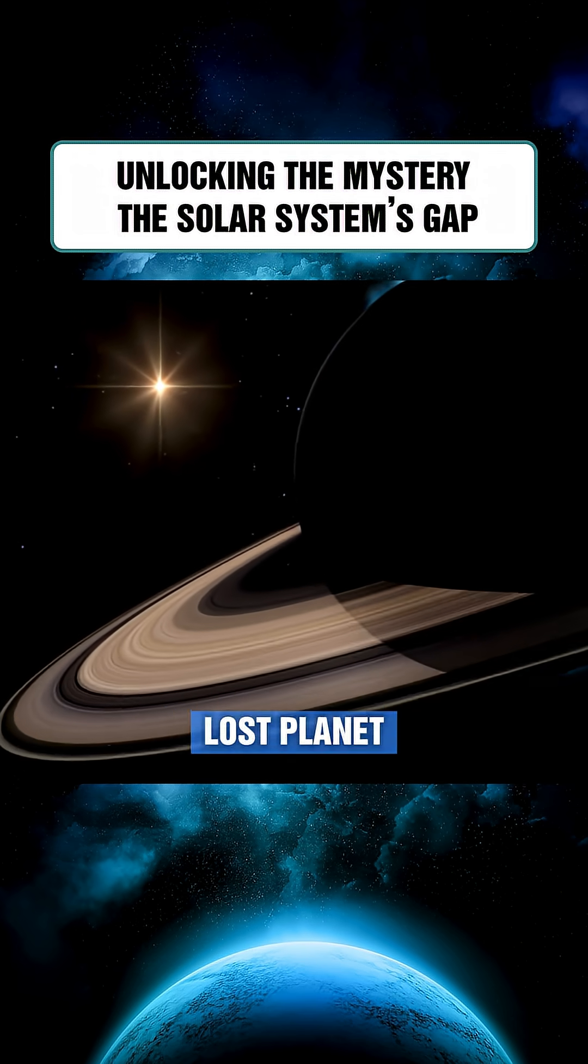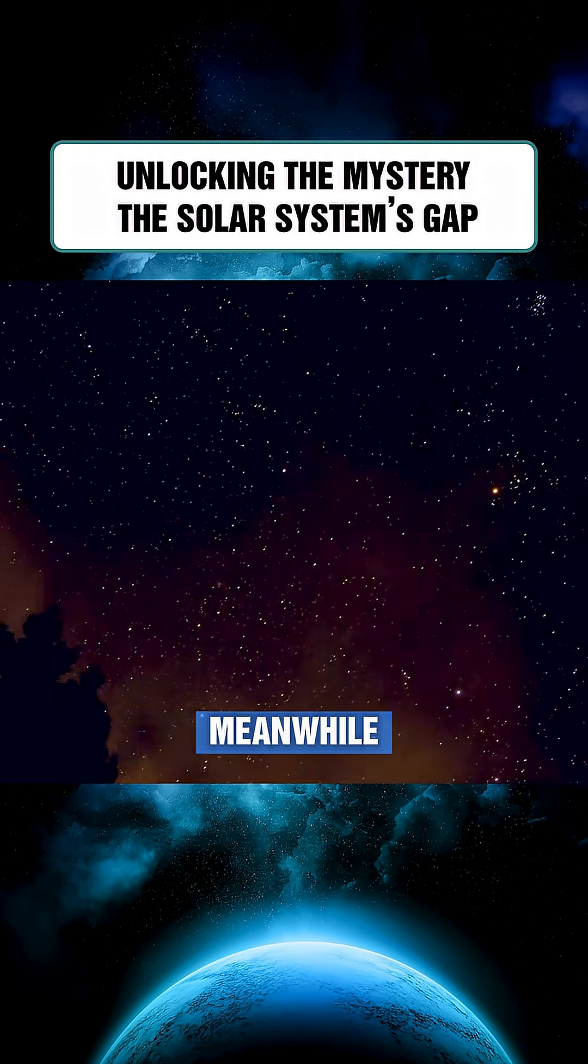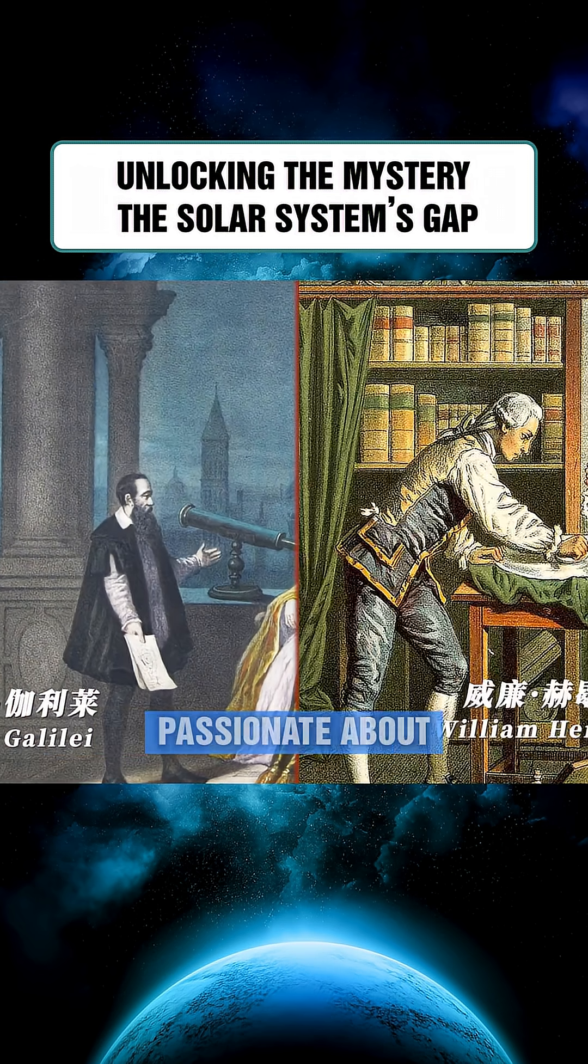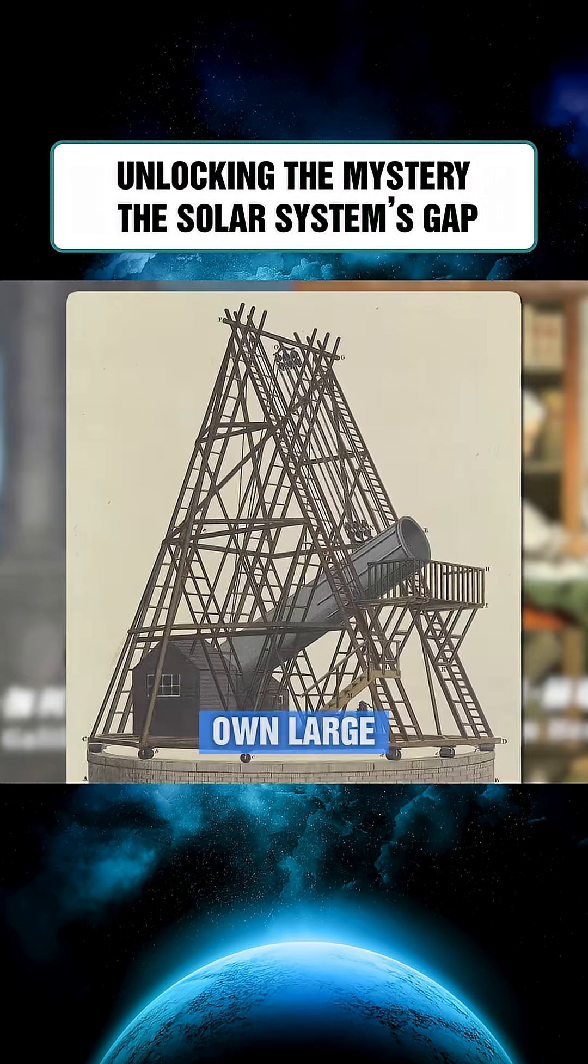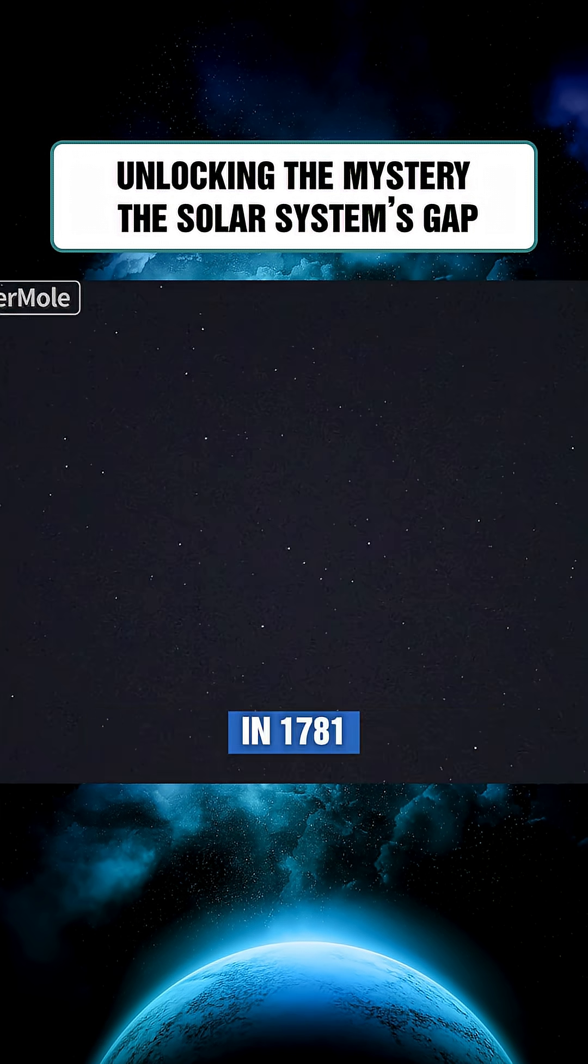The idea of a lost planet spread widely. Meanwhile, William Herschel, a musician passionate about astronomy, built his own large telescopes and in 1781 accidentally discovered a new planet, Uranus.